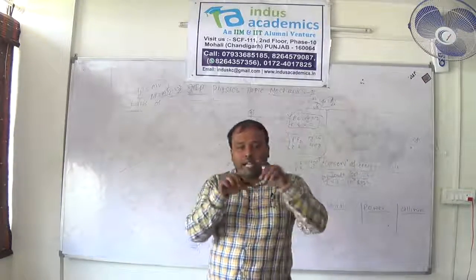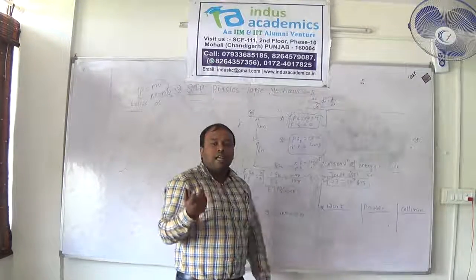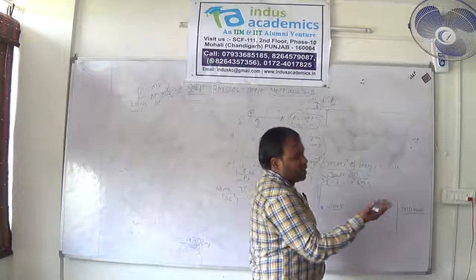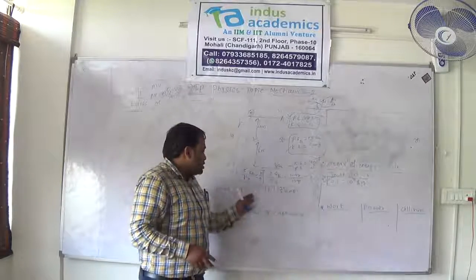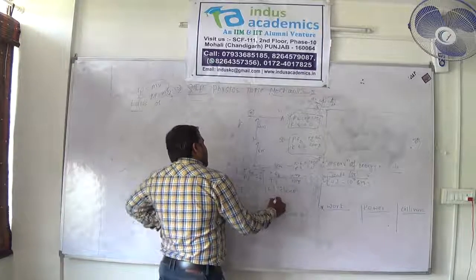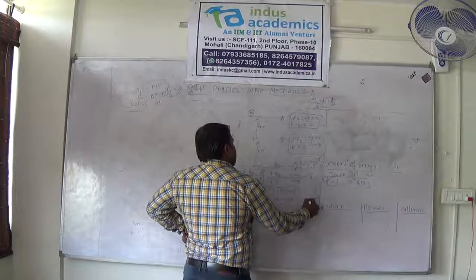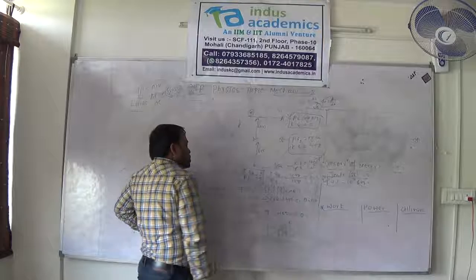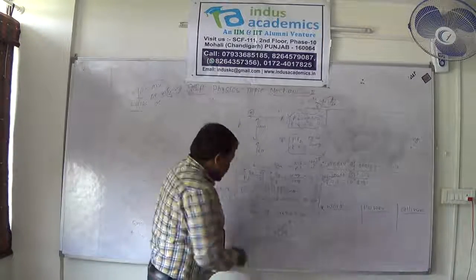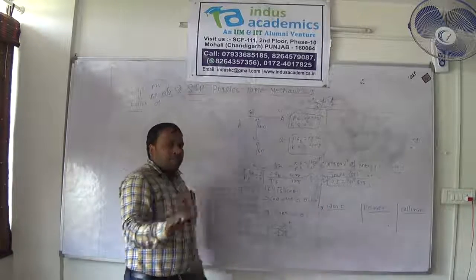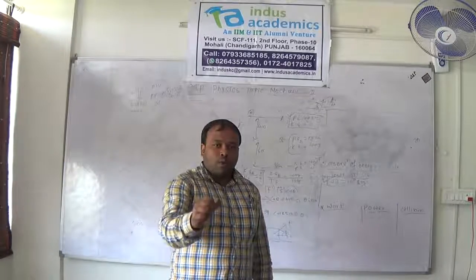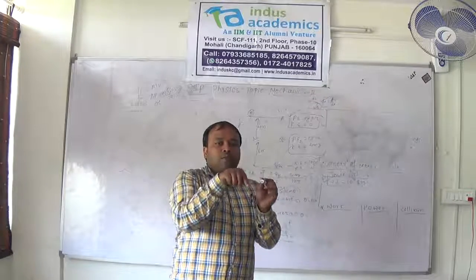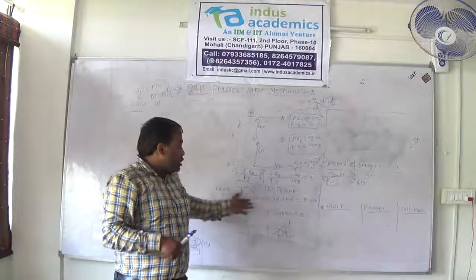When force and displacement are perpendicular (angle 90°), work done is zero. Work done is positive when cos θ is positive — that is, when θ is acute. Work done by friction is negative: if brakes are applied but the car still moves forward, friction acts backward while motion is forward, so angle is 180°, and cos 180° = −1, meaning work done by friction is negative. Similarly, work done by air drag on a falling body is negative.